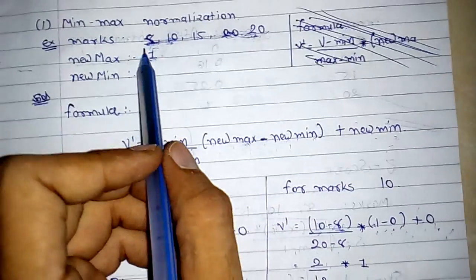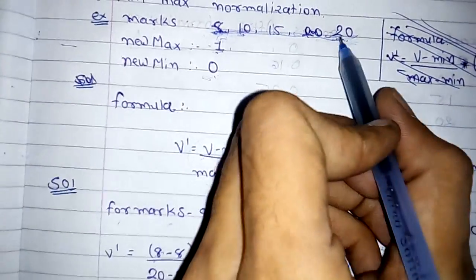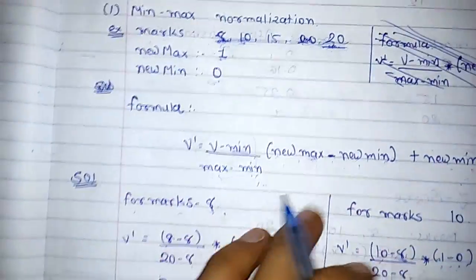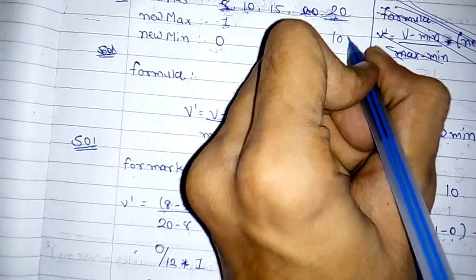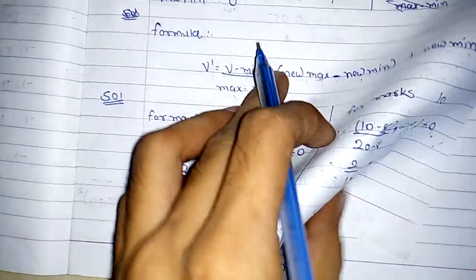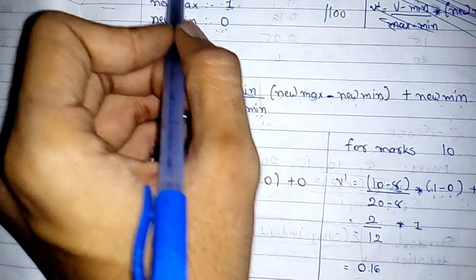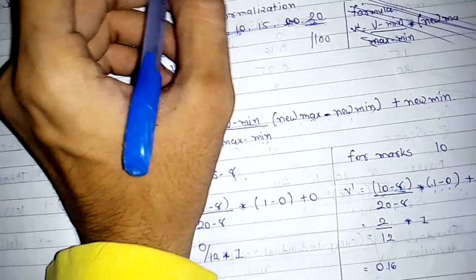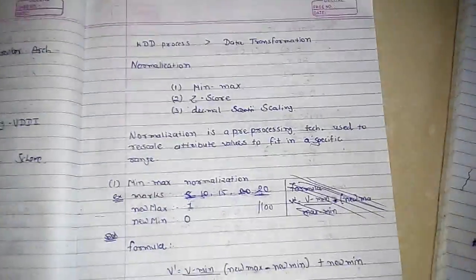For the dataset 8, 10, 15, and 20, the maximum value is 20. To find the decimal scaling for all the values, you divide all the values by 100, and you will get the answers in decimal form. We have now completed all three normalization techniques: min-max normalization, z-score normalization, and decimal scaling. Thank you for watching.